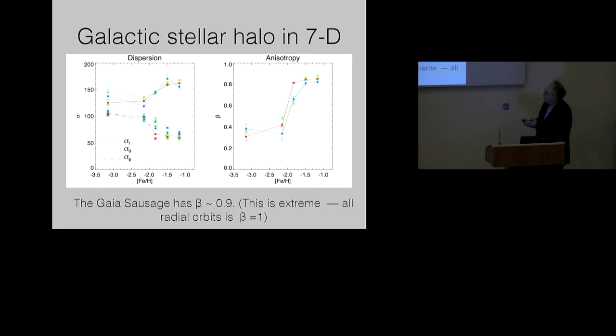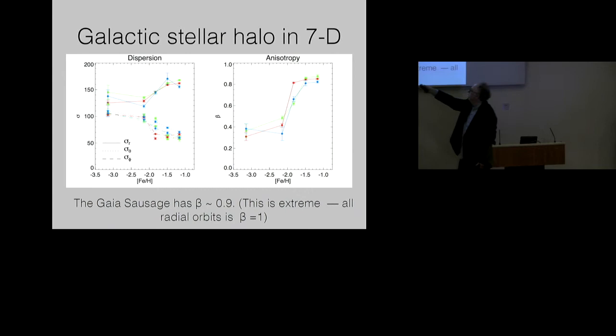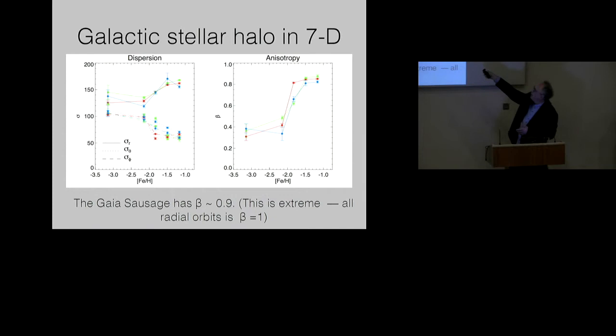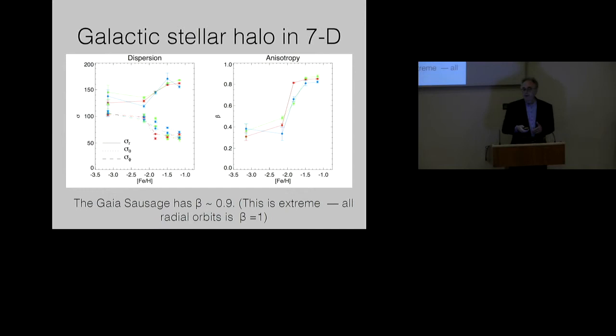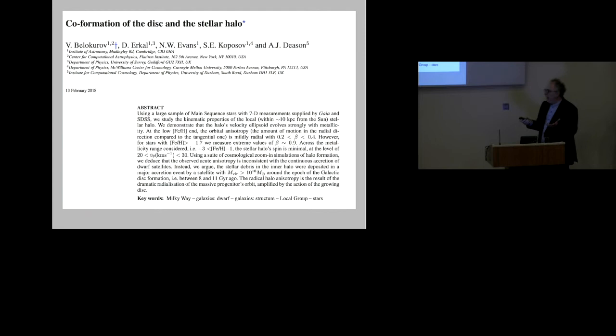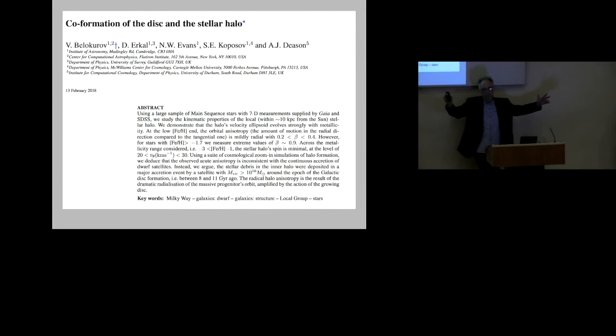We can plot this up and make it still more striking by looking at the anisotropy parameter versus metallicity. And we see exactly what I've just shown you, that as we move from really rather metal-poor stars, the anisotropy parameter is close to zero, so they're roughly isotropic. As we move to the more metal-rich stars in the halo, there is a strong jump in the anisotropy parameter. This is a very extreme value of the anisotropy parameter because beta equals one means the stars are moving on radial orbits. The left-hand plot shows the same thing but with regard to the three components of the velocity dispersion tensor.